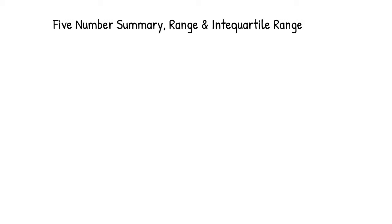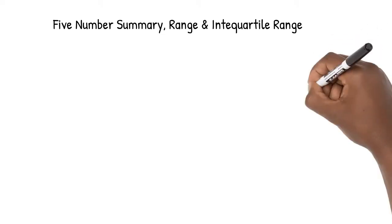One way to summarize a set of data is through a set of numbers called the five-number summary. By looking at the minimum, maximum, median, lower quartile, and upper quartile, we can get a good sense of where our numbers lie. Additionally, we can use those numbers to find the range and interquartile range to get a sense of the spread of our data.